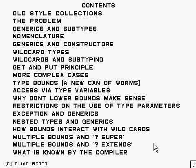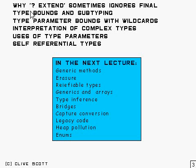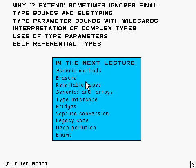Let's look at the next page to see what else we're going to cover. This is the rest of what I'm going to cover, and it's probably easiest to tell you what I'm not going to cover. That will be in the next lecture, and the main area is generic methods, and things like erasure, reifiable types, and generics and arrays.